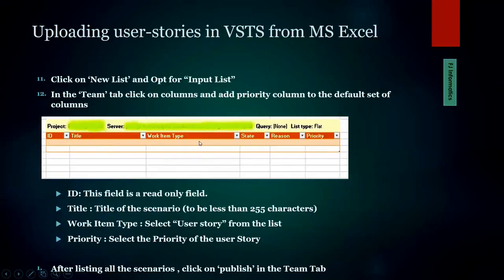Work Item Type should be set to 'User Story' from the dropdown, and Priority is the user story priority. Once you've listed all your user stories, click 'Publish' in the Team tab in MS Excel. All your user stories will be published to VSTS — saving you a lot of effort compared to typing them one by one manually.